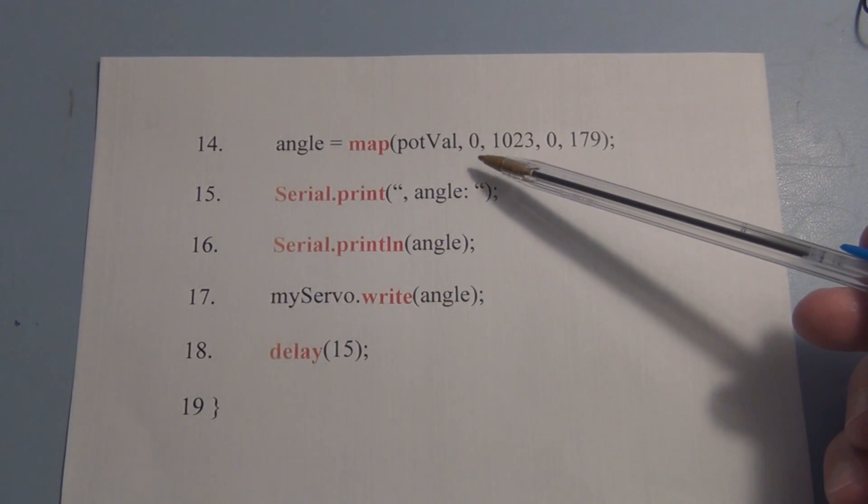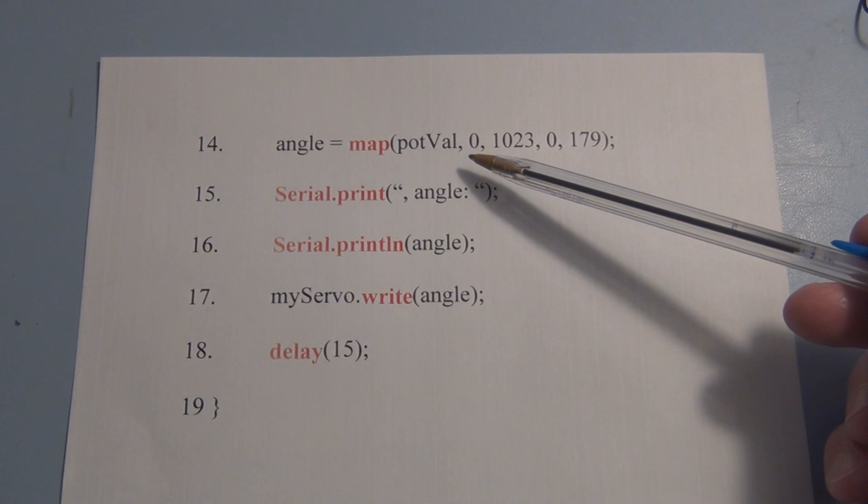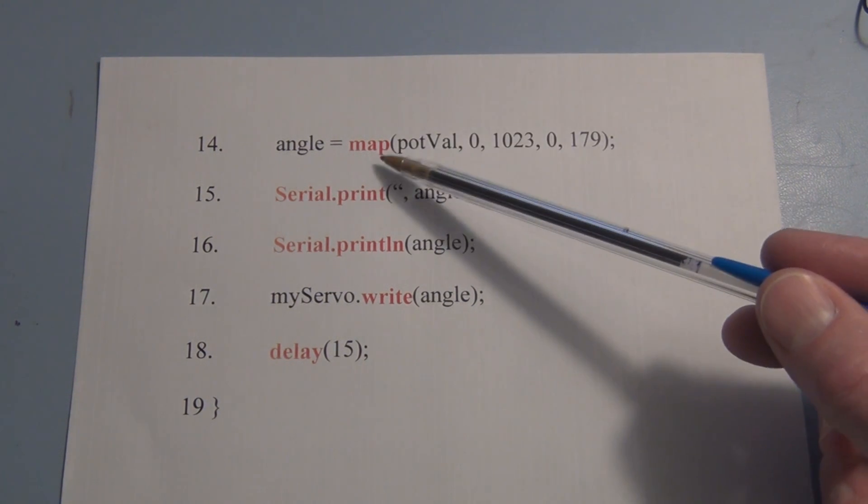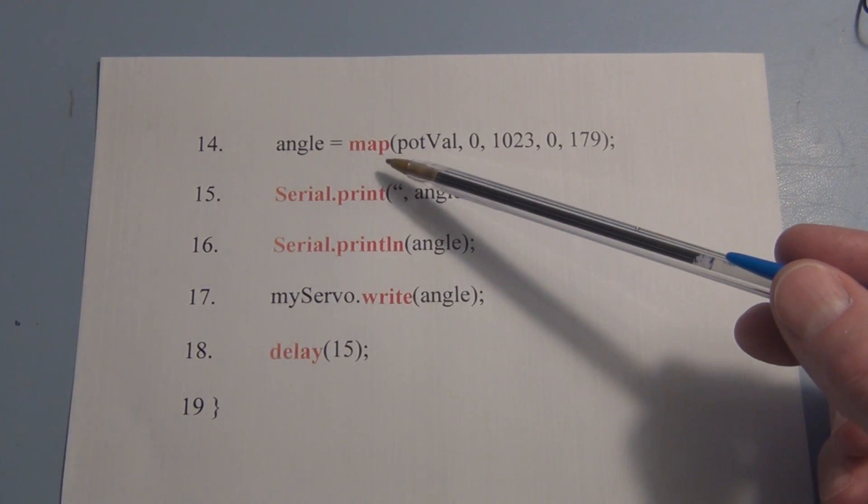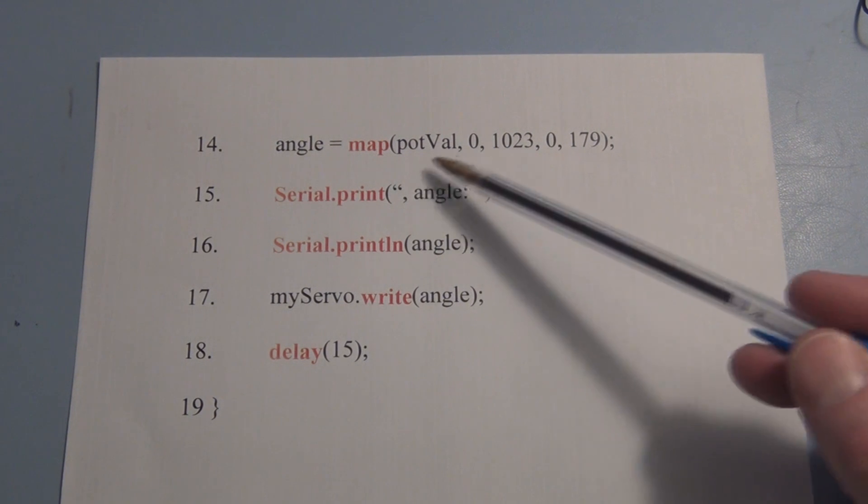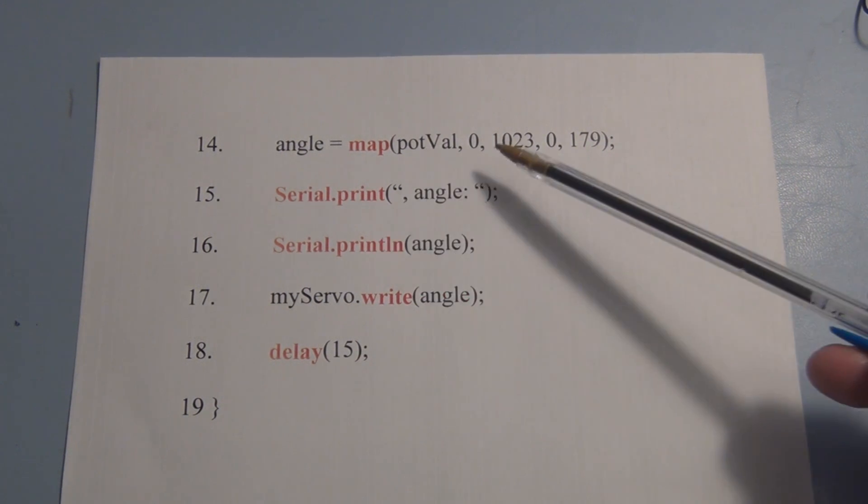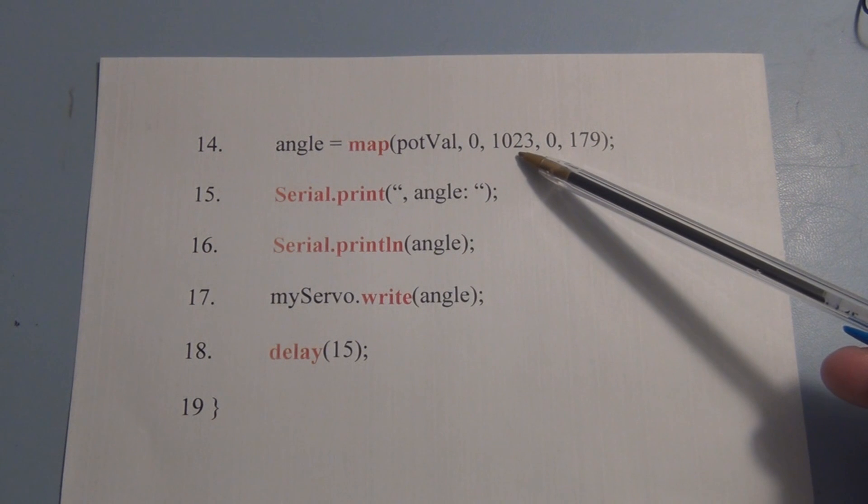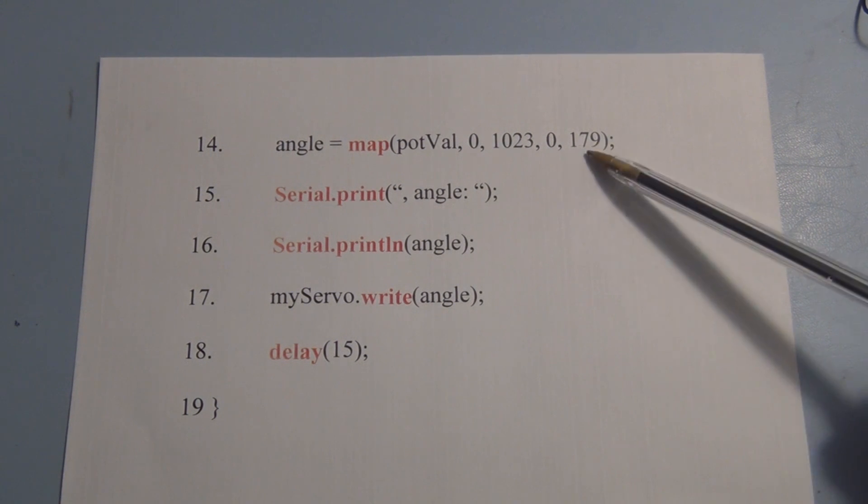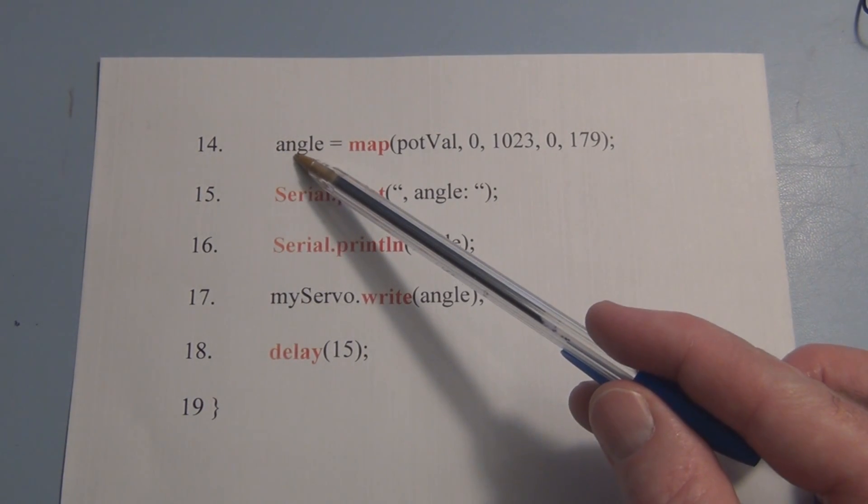This line of code here is where we get a usable number that the servo understands so it knows where to move to in that 0 to 179 degree range and we calculate that number using the map function which we have access to from the servo library. So this function does the scaling for us. It requires five arguments. The first argument is the number to be scaled. The second two numbers are the minimum and maximum numbers of the analog to digital converter and then the second two numbers are the minimum and maximum numbers for the servo motor. And then it returns a value to the variable angle.